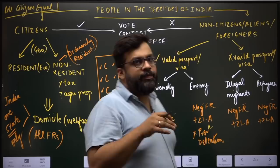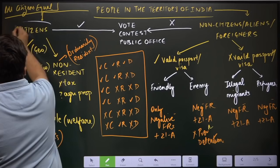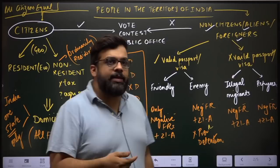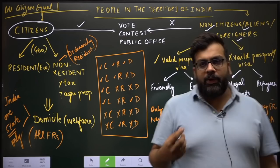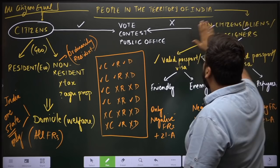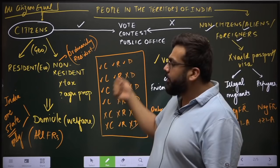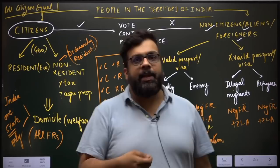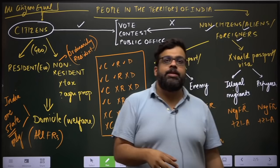When we talk about people who live in the physical, domestic territory of India, there are largely two kinds: citizens and non-citizens. Non-citizen, alien, and foreigner all mean the same thing. When we talk about aliens under law, we refer to people who are not citizens. The fundamental difference is that a citizen has the ability to vote, contest elections, and formally hold public office.